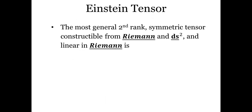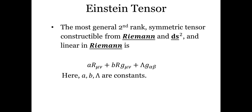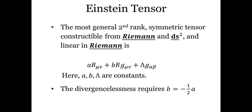We start by taking the most general second-rank tensor which is symmetric and linear in the Riemann tensor, and can only be constructed from the Riemann tensor and the metric tensor. It has this form: A times the Ricci tensor (which is the contraction of the Riemann tensor), plus B times the scalar curvature times the metric tensor, plus a constant lambda times the metric tensor. Note: there is a typing mistake — the final G should have mu-nu as its indices. A, B, and lambda are constants.